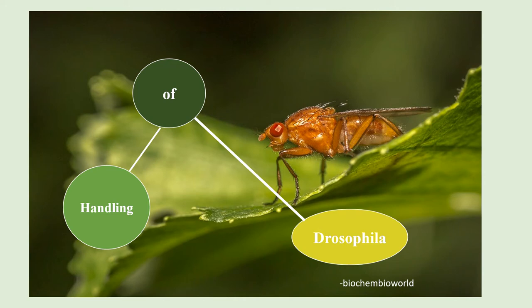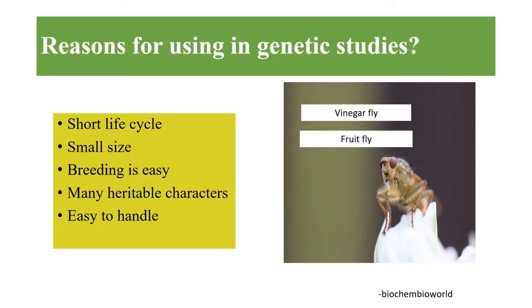Welcome back to my channel. Today I will be discussing handling of Drosophila melanogaster, which is commonly also known as vinegar fly or fruit fly. It is the best characterized multicellular eukaryote and it is usually used as a model organism in a number of genetic studies.